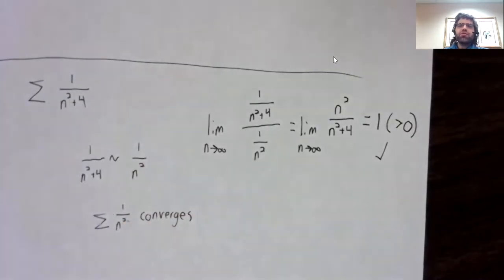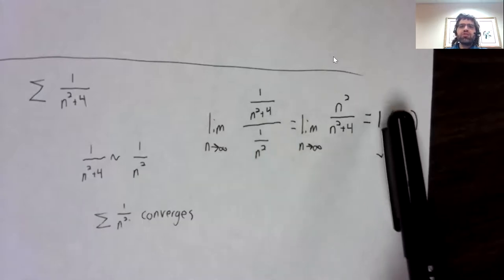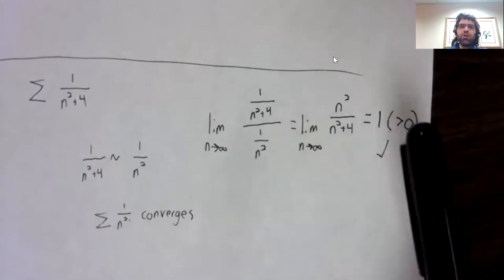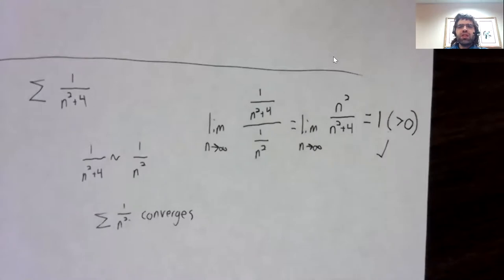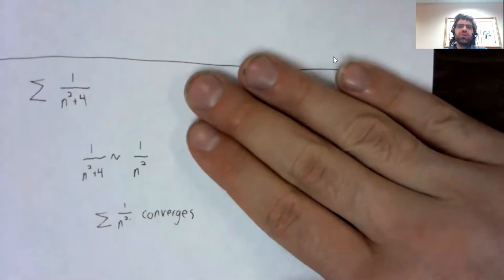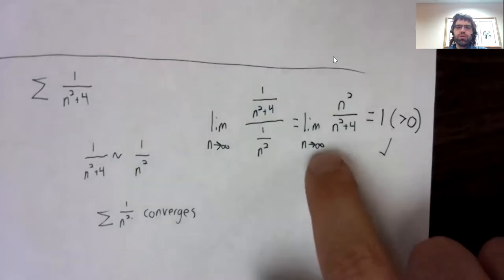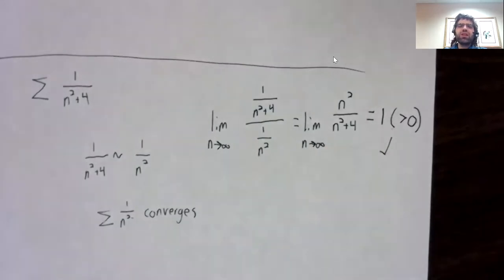And when you use the limit comparison test, you do have to take this limit and show that it's greater than zero. That was a mistake I saw in some homework where students would turn in answers that look like this. It's the right idea, but you need to formalize it properly with this limit.